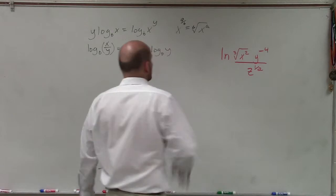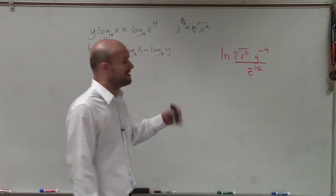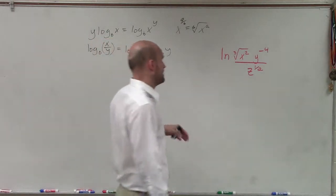OK. So in this problem, I have ln of the cube root of x squared times y raised to the negative fourth power divided by z raised to the 1 half power.